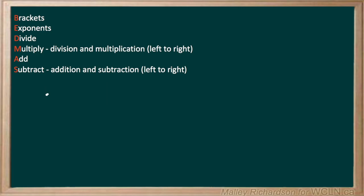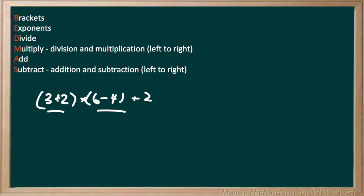For our final question we have 3 plus 2, all in brackets, times 6 minus 4, all in brackets, plus 2. Again we do our brackets first: 3 plus 2 is 5, and 6 minus 4 is 2, plus 2. Then we do multiplication before addition, so 5 times 2 is 10, and 10 plus 2 gives us a final answer of 12.